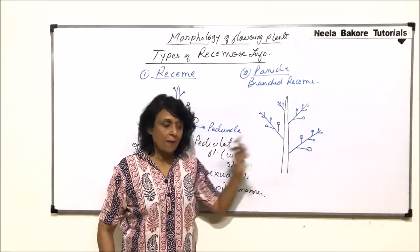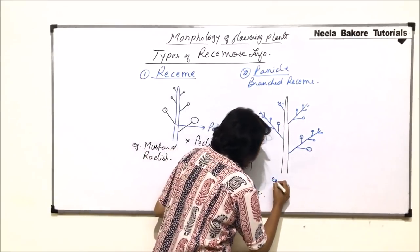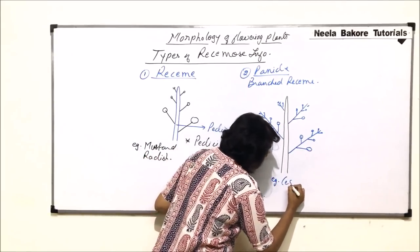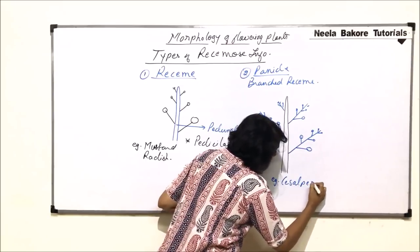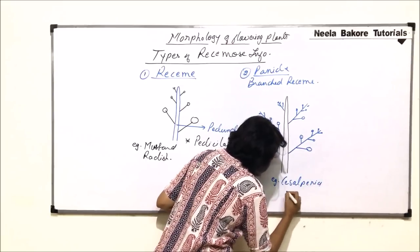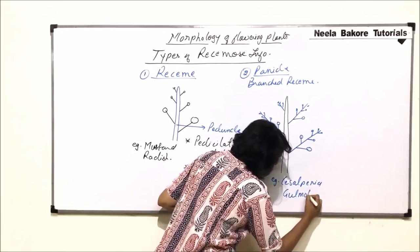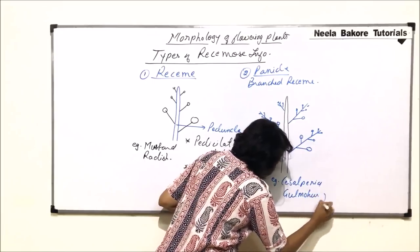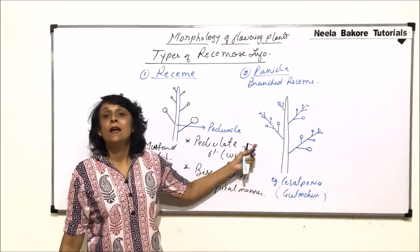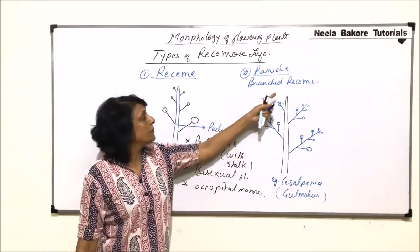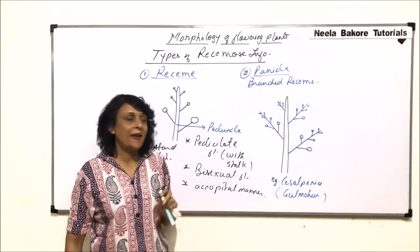On every raceme, the pattern is the same. The example of this is Caesalpinia, that is gulmohar. In Caesalpinia, we find a compound raceme which is known as panicle.